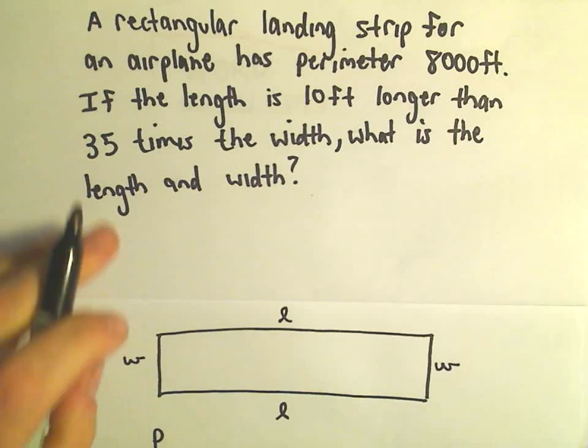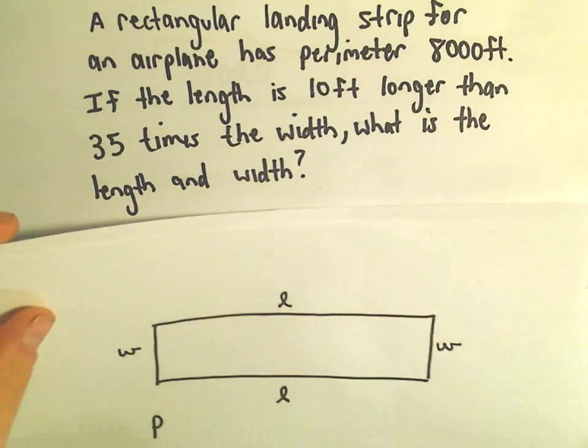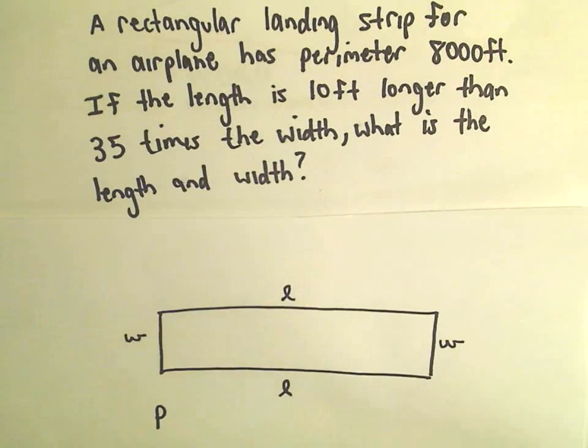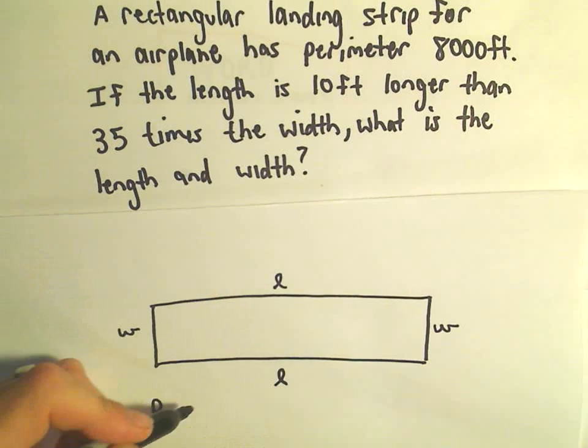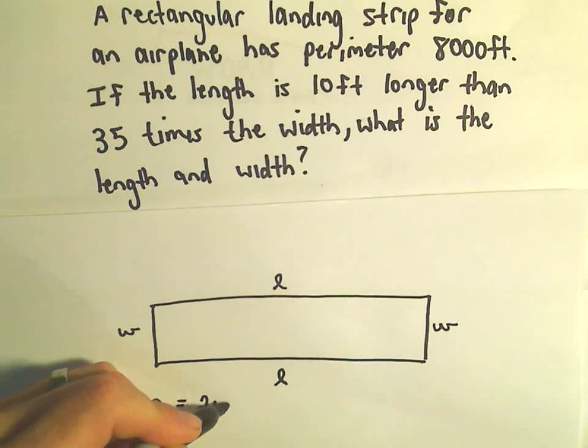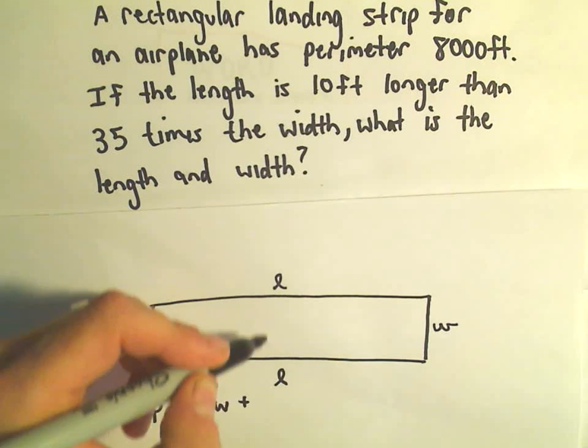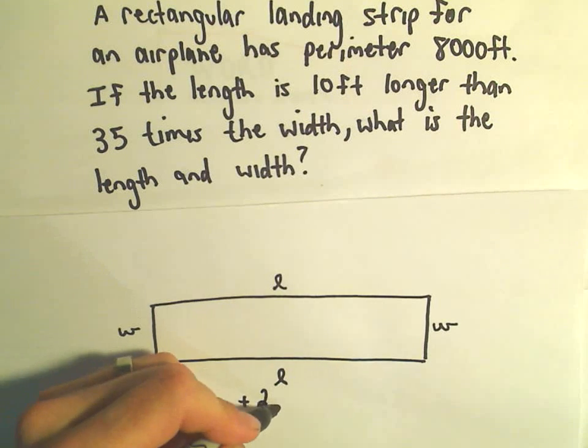We know that the perimeter, to calculate the perimeter, we just simply add up the distance around the rectangle. So we would add 1W plus 1W, and that would give us 2W. And then we would add 1L and 1L, and that would give us 2L.